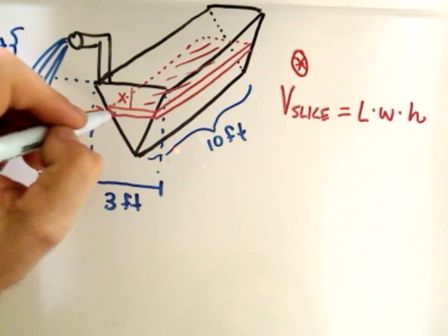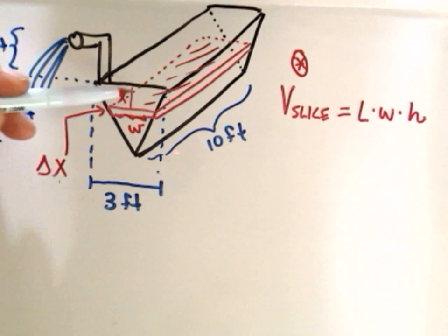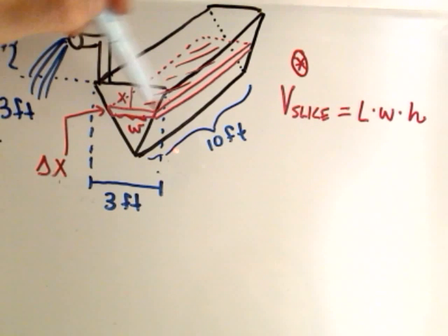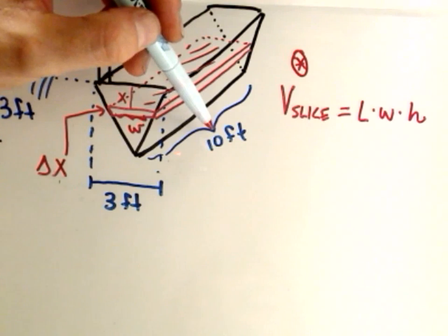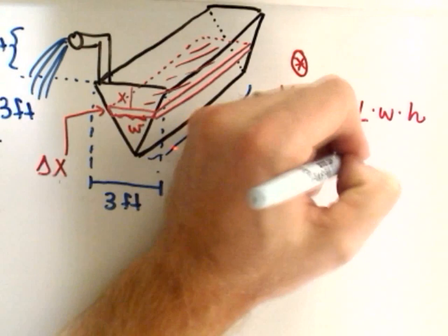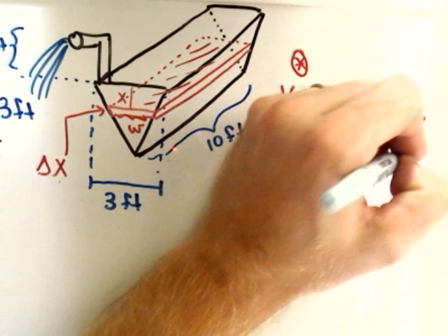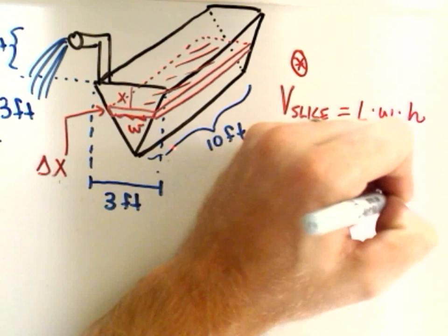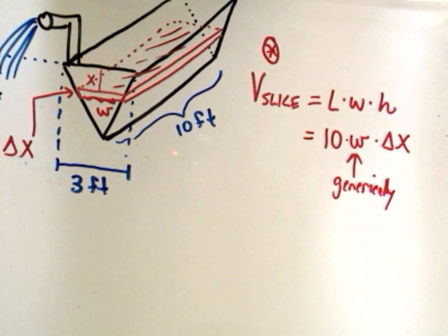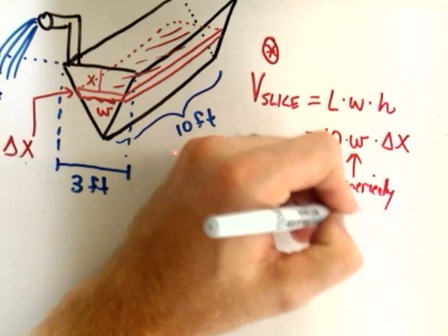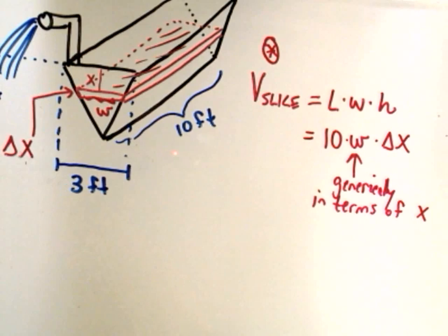Maybe we'll call this distance across, that'll be our width. Notice, depending on how far down x is, the width is going to change. If we're further down into the tank, the little width of that sliver of water is going to change. So we'll have to account for that, but notice the height is always the same. It's delta x, and notice the length of that little section of water would always be 10 feet. So the volume of the slice, if we call the length 10, the width we don't know. That's going to change, so we're going to have to label this part more generically. And we know the height of it is also delta x. So now what I need to do is I need to figure out the width generically in terms of x, the distance I've dropped down from the top of my tank.